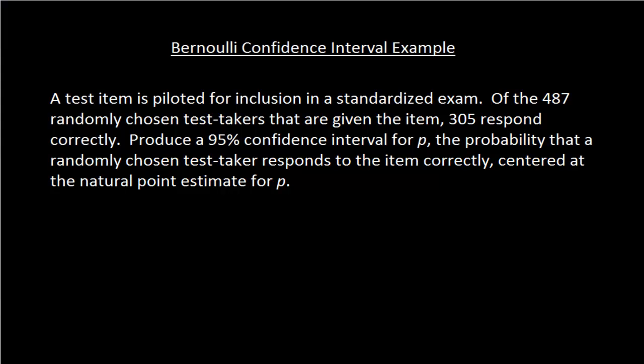Produce a 95% confidence interval for p, the probability that a randomly chosen test taker responds to the item correctly, centered at the natural point estimate for p.